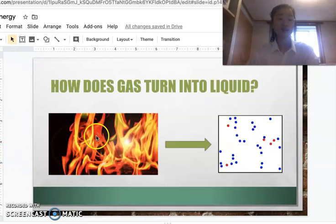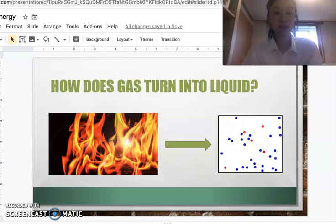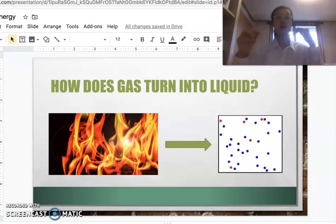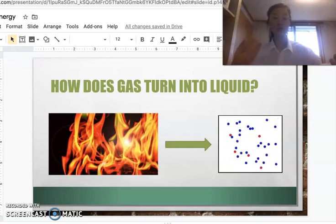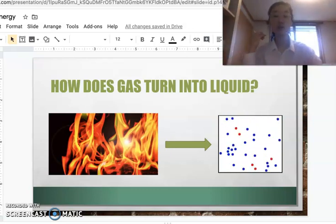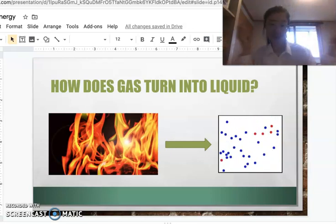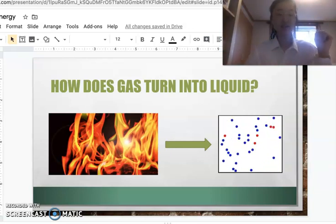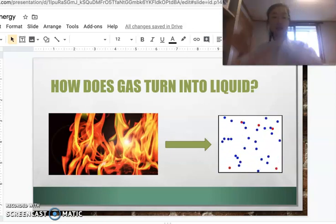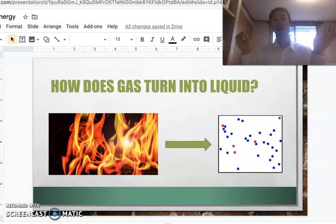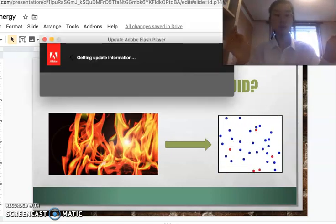Another example. Well, how does gas turn into a liquid? Well, as something is heated, so as something gets hotter, it obviously gets more thermal energy, which will cause the particles to move faster. And so a solid turns into a gas. And if something is cooled down, then the opposite will happen and it loses the thermal energy. So the particles won't move around as much.